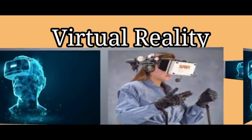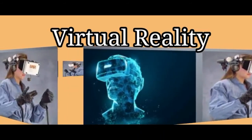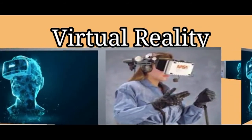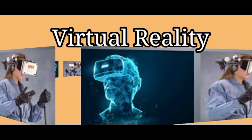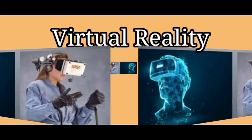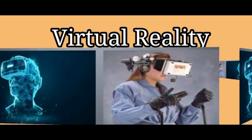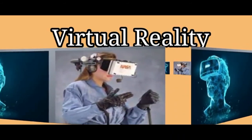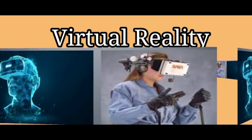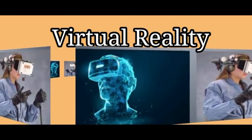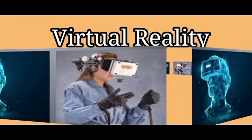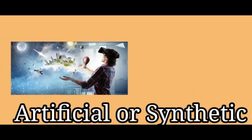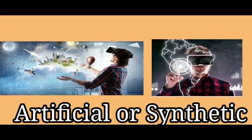The devices also monitor the user's action. The goggles, for example, track how the eyes move and respond accordingly by sending new video input. Virtual Reality systems require extremely expensive hardware and software. Thus, they are used mostly for research purposes and by top companies. Virtual Reality is also known as Artificial Reality or Synthetic Reality.